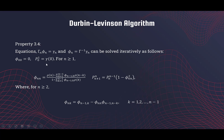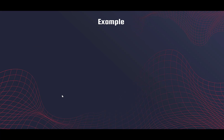For n greater than or equal to 1, phi_{n,n} uses this formula, and for n greater than or equal to 2, the intermediate coefficients come from a separate equation. There are a lot of notations, but the key point is that we need to obtain phi_{n,1}, phi_{n,2}, phi_{n,3}, up to phi_{n,n}, and we can use these two sets of formulas to get those numbers. Let's look at an example to see what is going on.